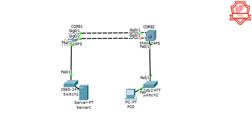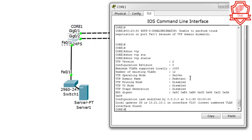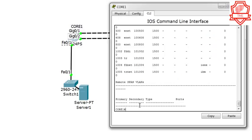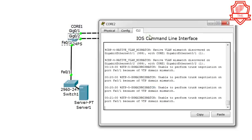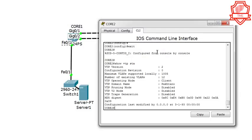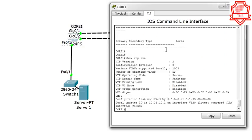That should fix everything. Let's run 'show vtp status' — this is a server, that's our domain, and we have 12 VLANs. Let's run 'show vlan' as well. We're going to create a new VLAN shortly to see if trunking is working. Running 'show vtp status' again — we are now on the same domain, and Core 2 is in client mode. Let's go to Core 1 and run 'show vtp status' — this one is in server mode.